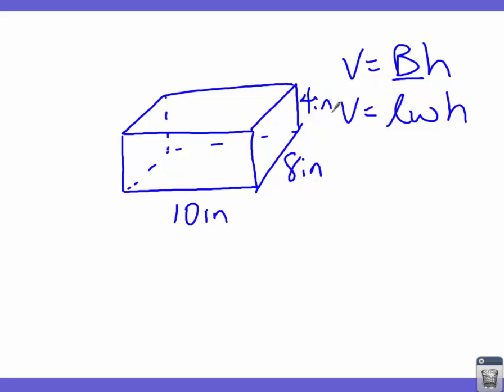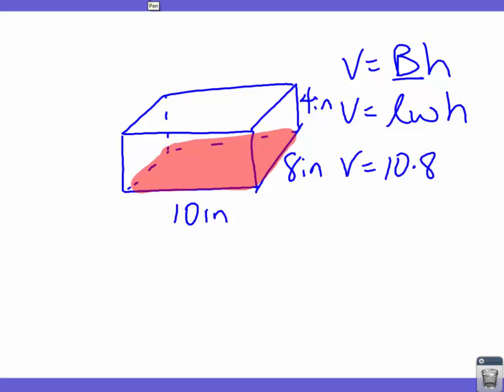The formula asks for length (10), width (8), and height (4), giving us 10 times 8 times 4. Note that the base is not always what the shape is sitting on. We go to our calculator: 10 times 8 is 80, times 4 gives us 320. Because we have three dimensions, the answer is 320 inches cubed. That's how we find the volume of a rectangular prism.